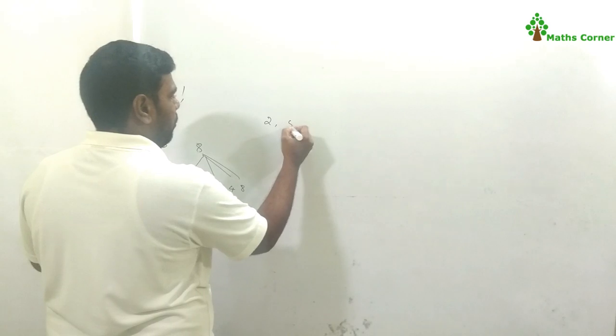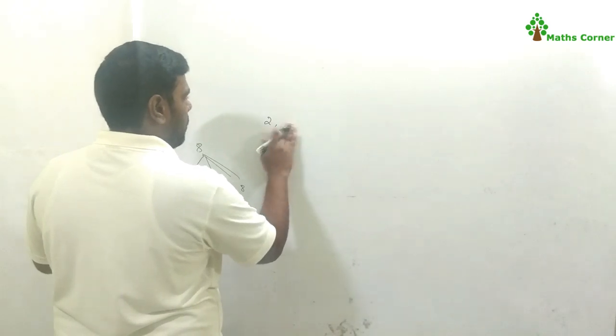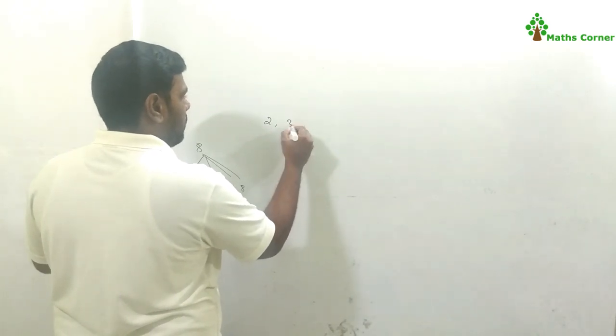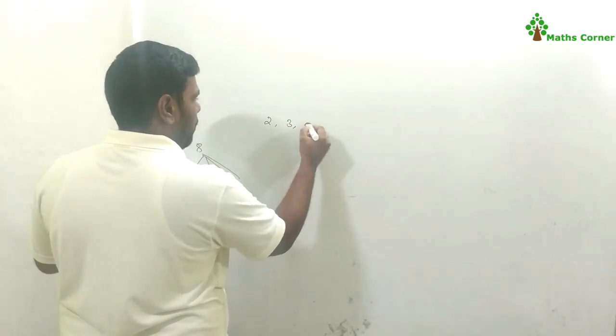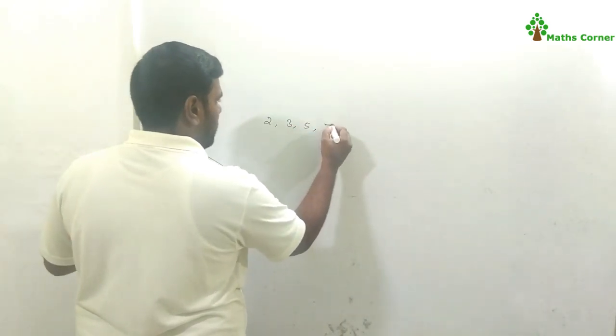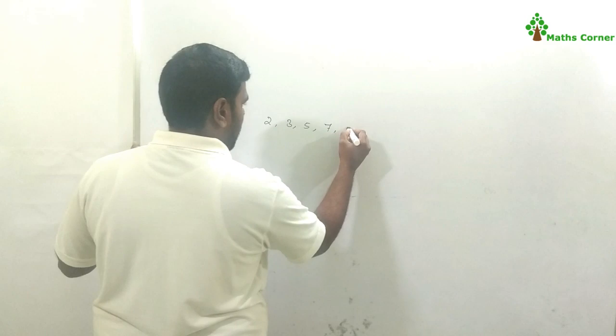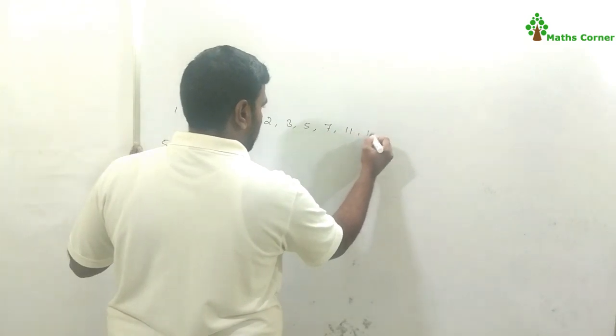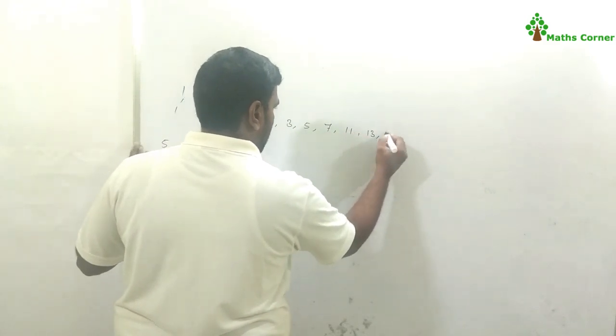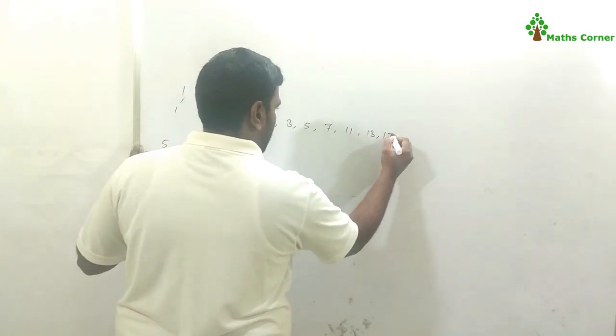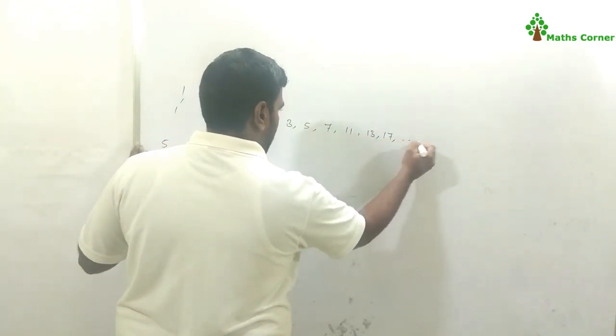The prime numbers are: 2, 3, 5, 7, 11, 13, 17, and so on.